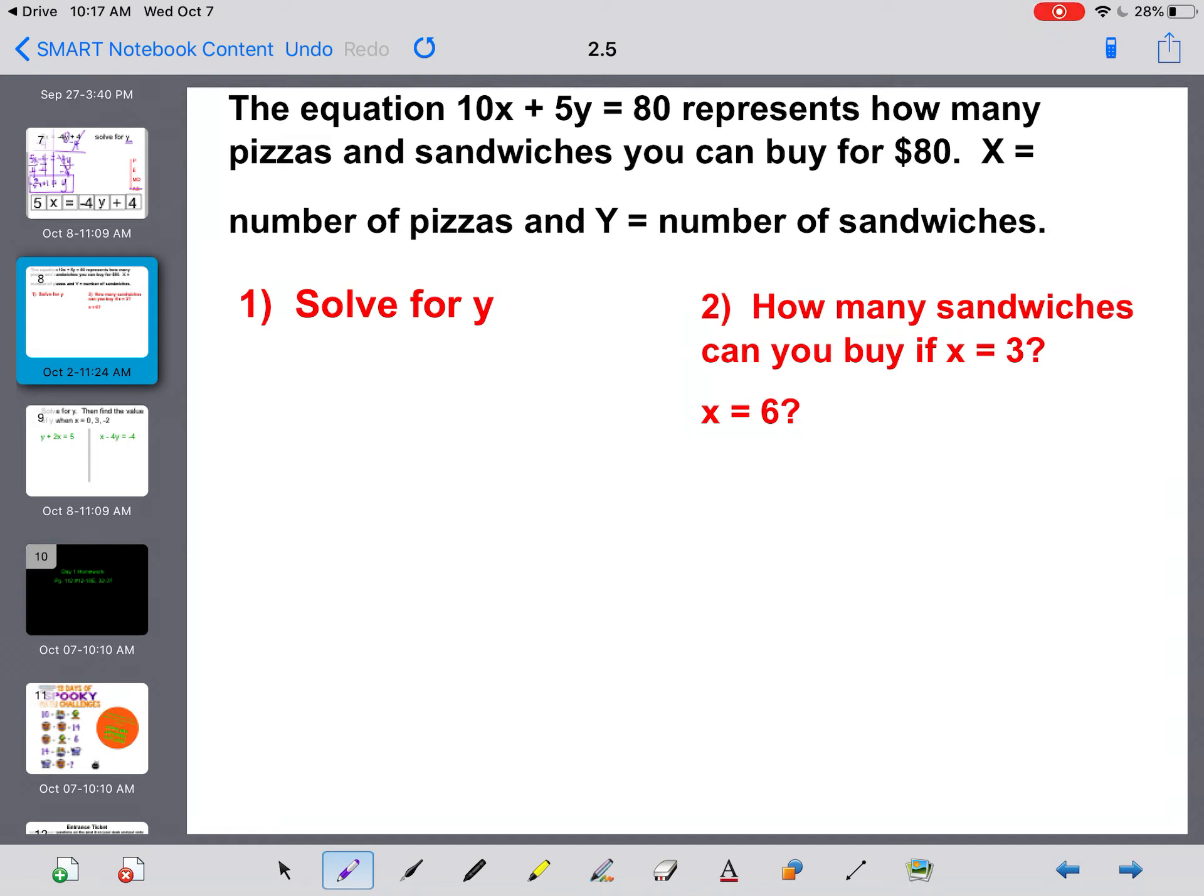Word problems. The equation 10x plus 5y equals 80 represents how many pizzas and sandwiches you can buy for $80. X is the number of pizzas, and y is the number of sandwiches. First thing we need to do is solve for y.